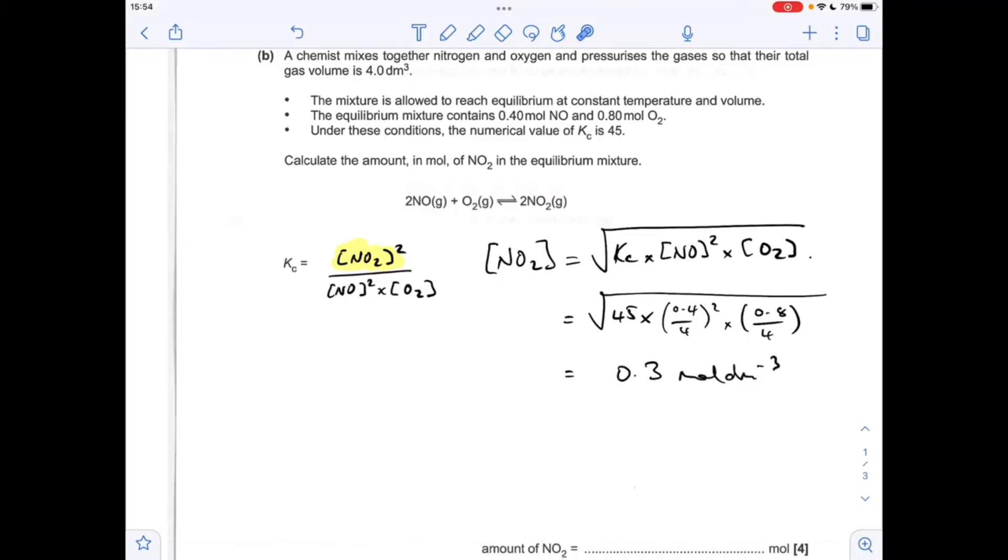So all we need to do now is multiply that by the volume, which is 4, to get the moles of NO2, which comes out at 1.2 moles.